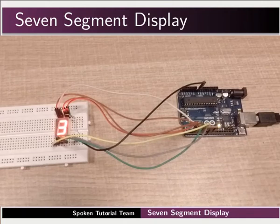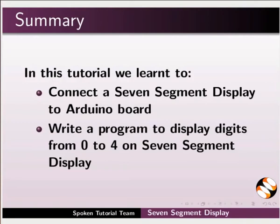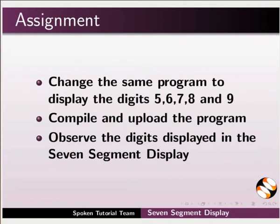This brings us to the end of this tutorial. Let us summarize. In this tutorial, we learnt to connect a 7-segment display to an Arduino board and write a program to display digits from 0 to 4 on a 7-segment display. Try doing the following assignment: change the same program to display the digits 5, 6, 7, 8, and 9. Compile and upload the program, and observe the digits displayed in the 7-segment display.